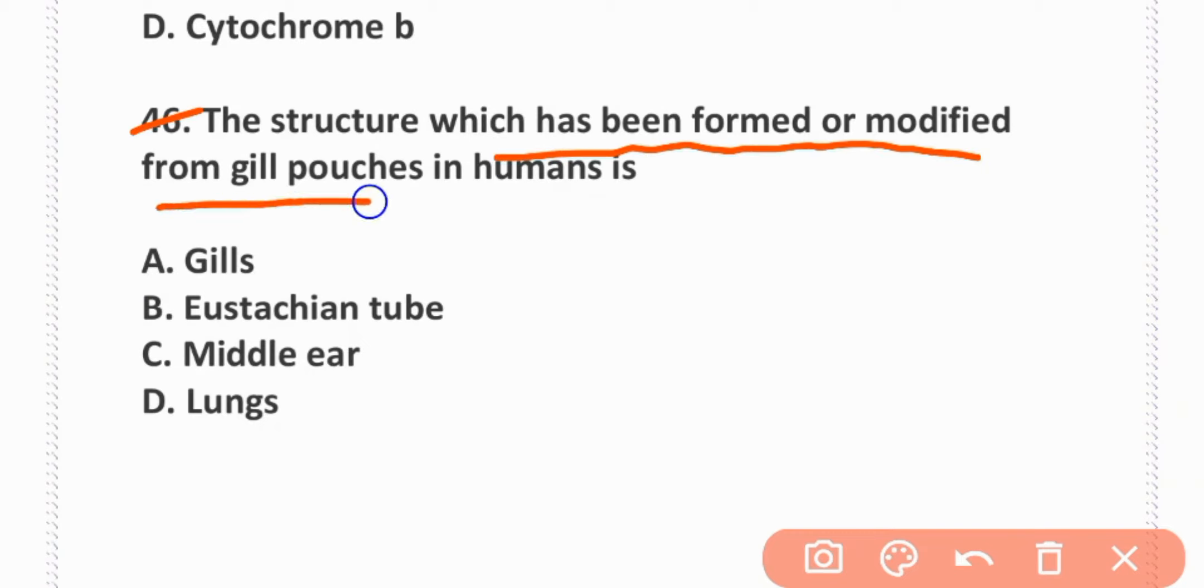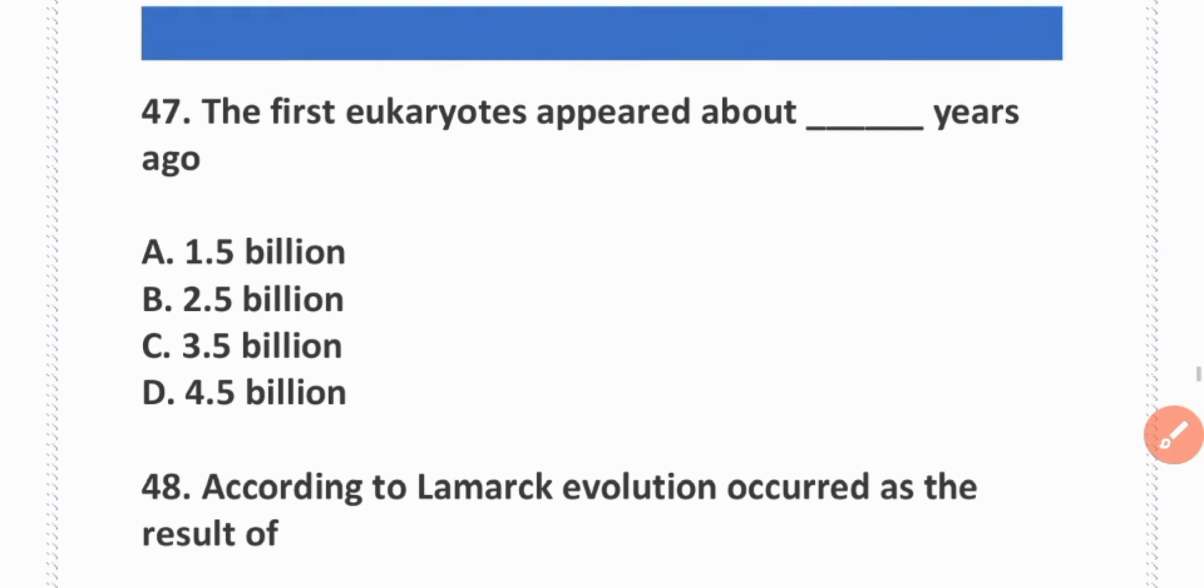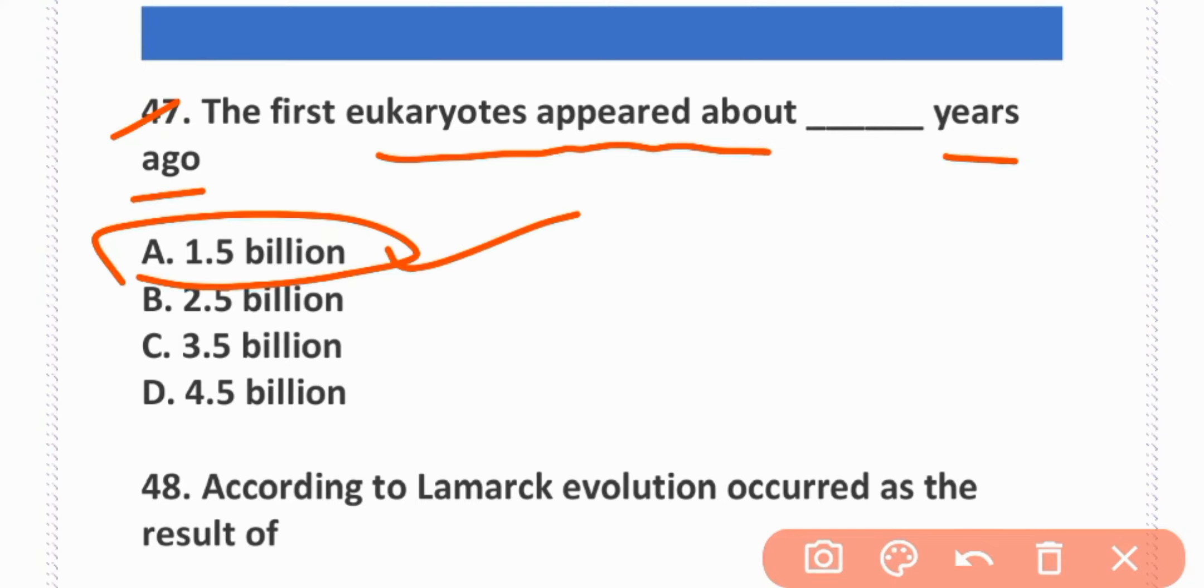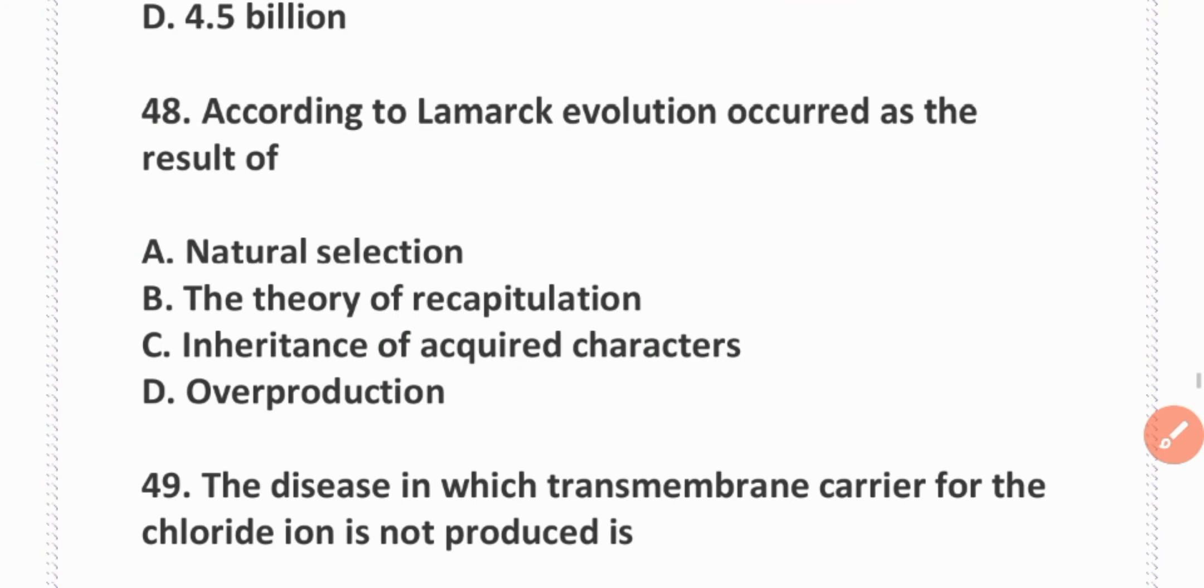The one which is present in all aerobic species is cytochrome c. The structure which has been formed or modified from gill pouches in humans is Eustachian tube. The first eukaryotes appeared about 1.5 billion years ago.